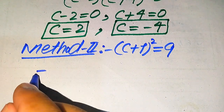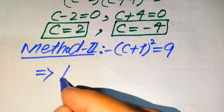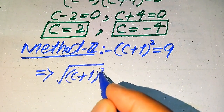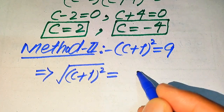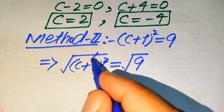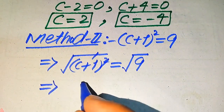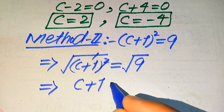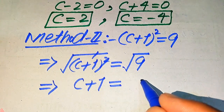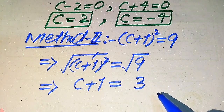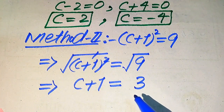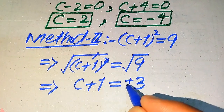We apply the square root on both sides. After applying the square root, the left side becomes √[(c + 1)²] and the right side becomes √9. The square and square root cancel, giving c + 1 = 3. The square root of 9 is 3.